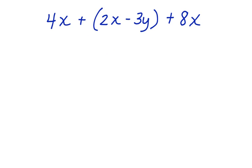Now let's take a look at this one. I have 4x plus the quantity 2x minus 3y plus 8x. Again, I'm going to combine like terms, but because of these parentheses, it tells me, according to the order of operations, to simplify this first, which I can't do because the terms aren't alike.